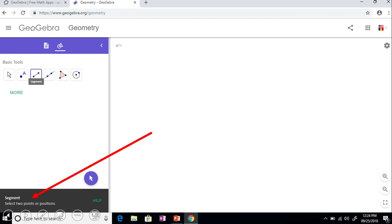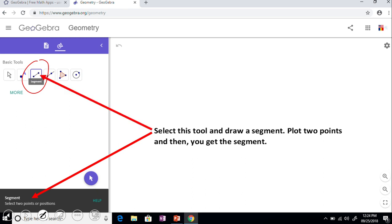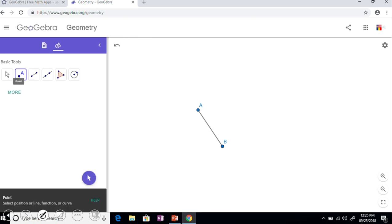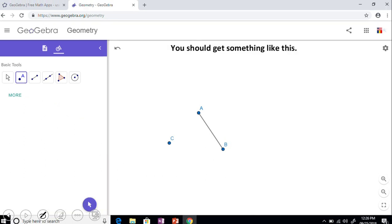I'm going to click on the segment which is right here, and it says select two points or a position. We're going to select two points and we're going to get something like this, so this is the segment AB. Then I'm going to select the next thing which is a point, and we're going to put a point C on that right side of the screen.